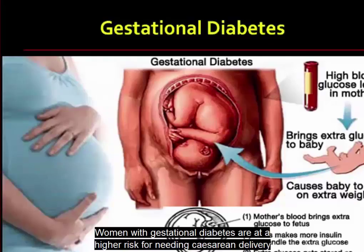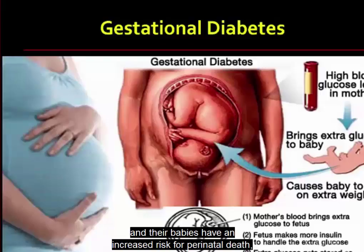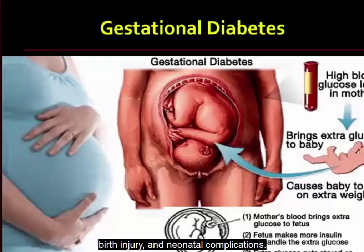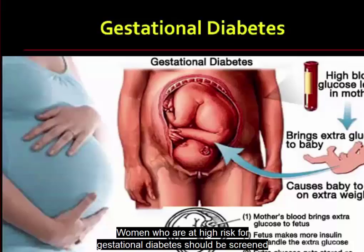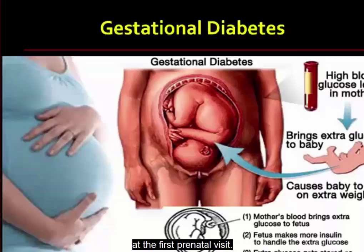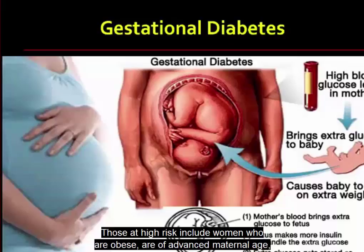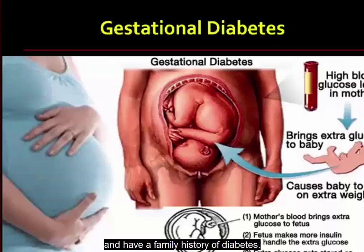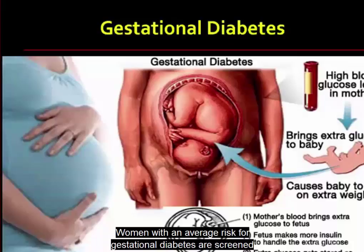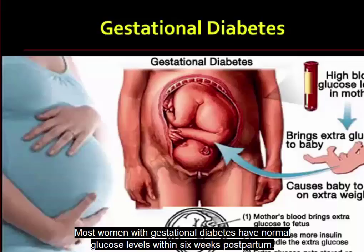Women with gestational diabetes are at a higher risk for needing cesarean delivery, and their babies have an increased risk for perinatal death, birth injury, and neonatal complications. Women who are at high risk for gestational diabetes should be screened at the first prenatal visit — those who are obese, of advanced maternal age, or have a family history of diabetes. Women with average risk are screened with an oral glucose tolerance test at 24 to 28 weeks of gestation. Most women with gestational diabetes have normal glucose levels within 6 weeks postpartum.